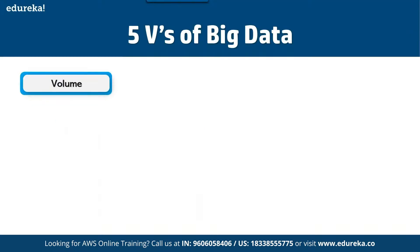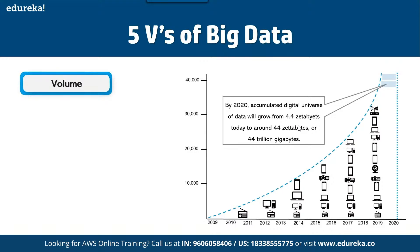We have five V's of big data. The first is Volume. By 2020, the accumulated data universe will grow from 4.4 zettabytes to around 44 zettabytes, or 44 trillion gigabytes. Our data is increasing, and since we are storing a lot of data and upgrading operating systems, the file size requirements are growing hugely.